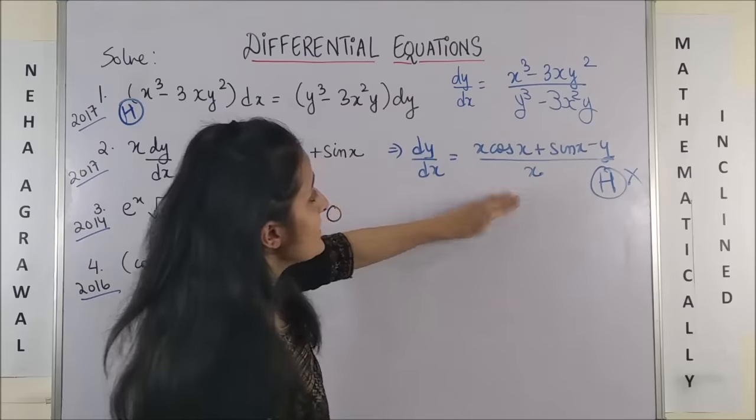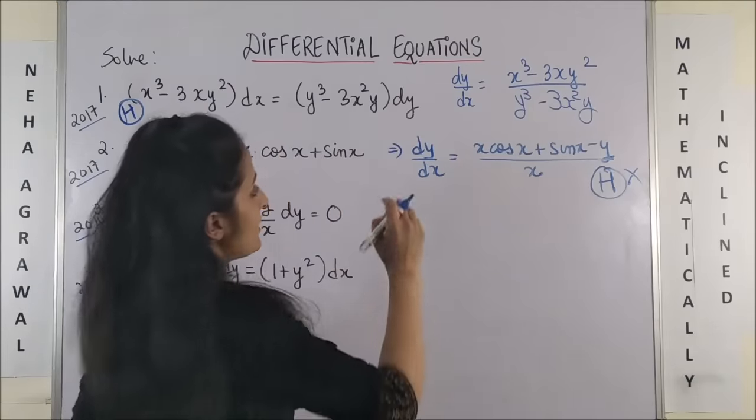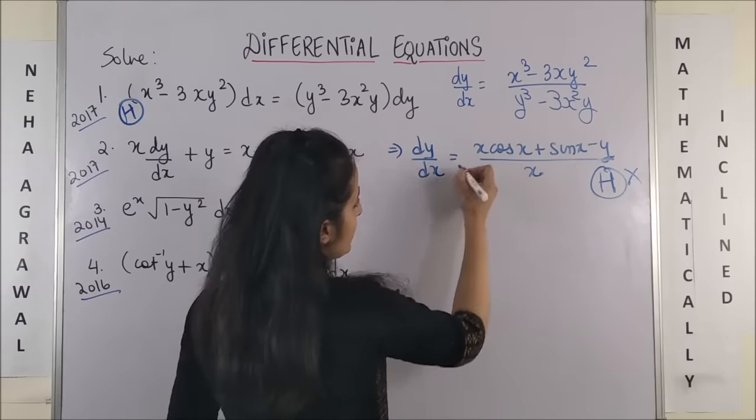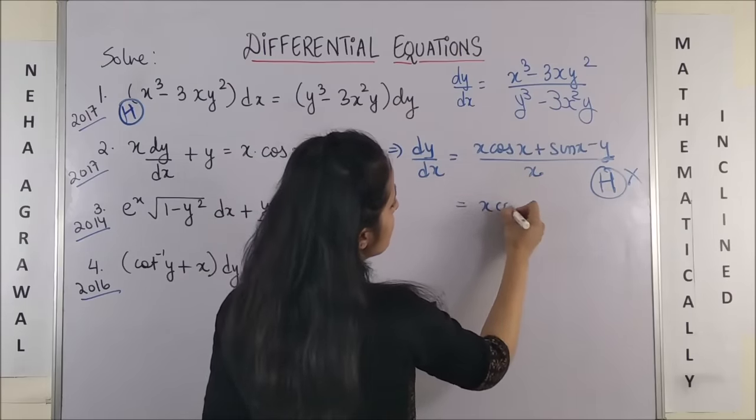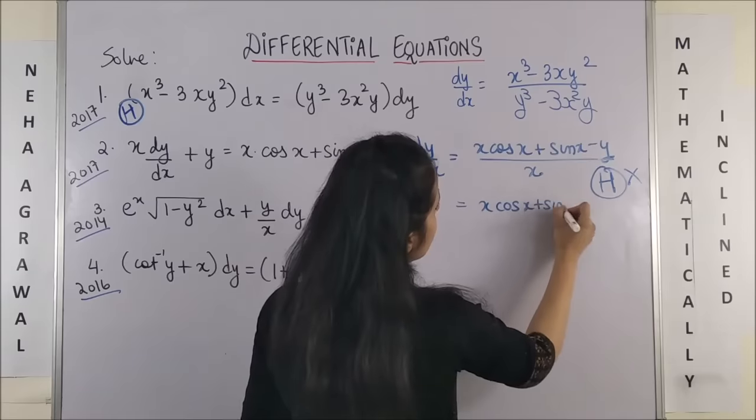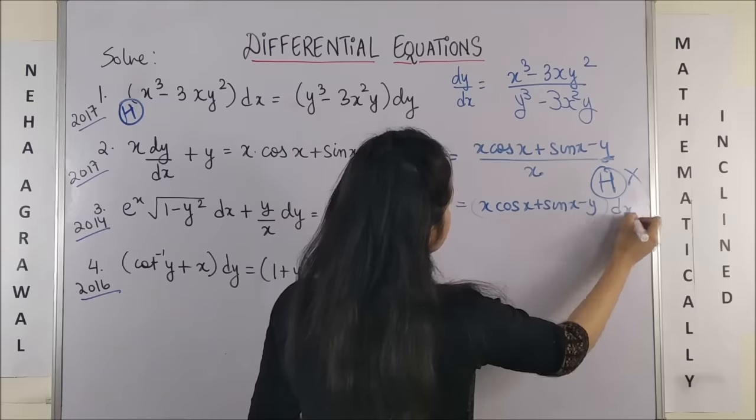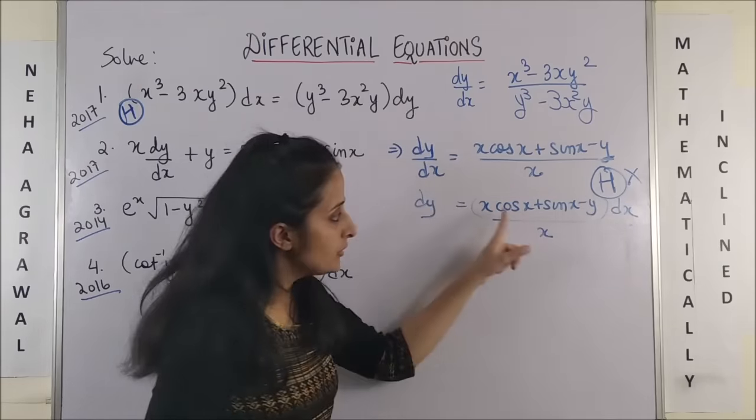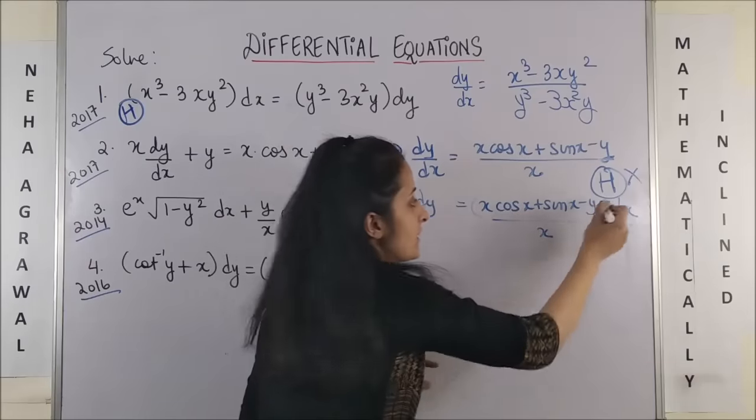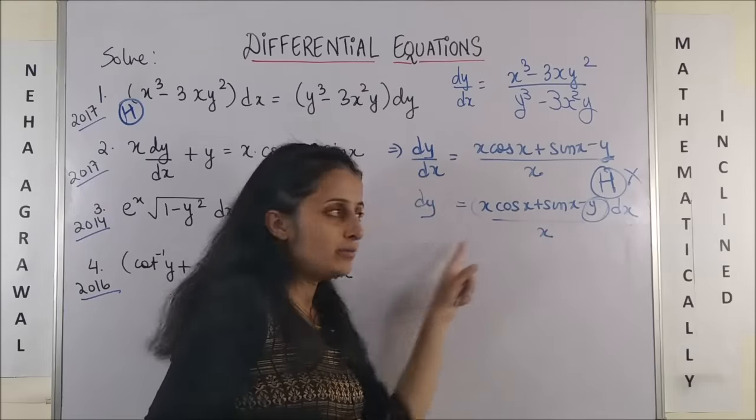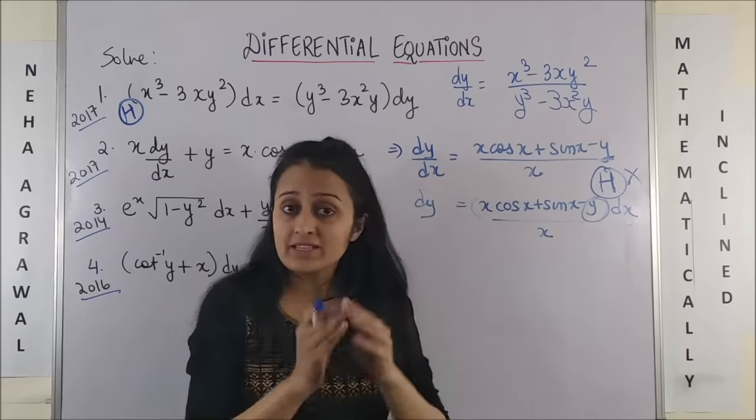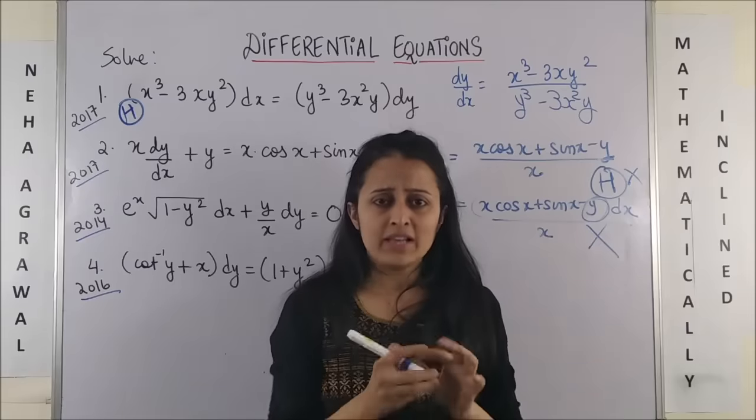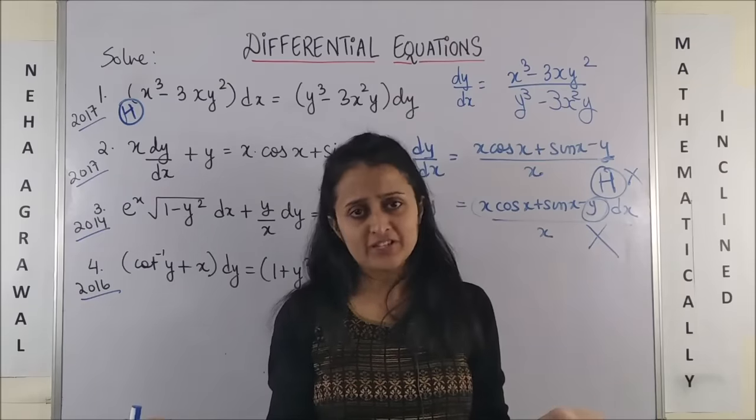Let's see if I can separate these out. If I take my dx on this side, this is x cos x plus sin x minus y whole dx upon x, and this is dy. Now, although all other terms are in x, what about y? I cannot bring it down without getting dx. So, it means that it is not separable.